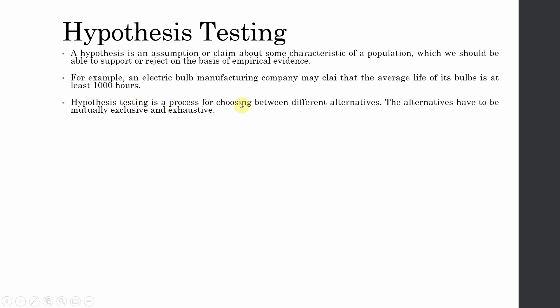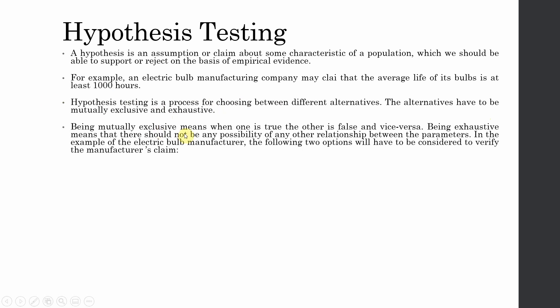Hypothesis testing is a process for choosing between different alternatives. The alternatives have to be mutually exclusive and exhaustive. Mutually exclusive means if one is true, the other is false. Being exhaustive means there should not be any possibility of any other relationship — either the bulbs light for 1000 hours or they don't. There is no middle way.